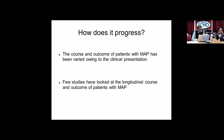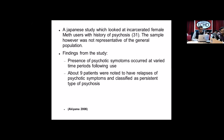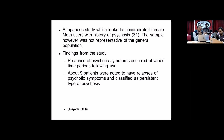How does it progress? This is a matter of debate as there haven't been too many studies looking at course and outcome of patients, and existing studies have certain limitations in patient populations. A study done in 2006 by Akiyama looked at incarcerated female methamphetamine users with a history of psychosis. The sample is not representative of the population — these are females with criminal backgrounds — but he looked at the longitudinal course and found that psychotic symptoms occurred at varied time periods following use. Among the 31 patients, since they were in jail, he noticed that following a large period of abstinence, a large proportion — about nine patients — had relapses despite not using methamphetamine.